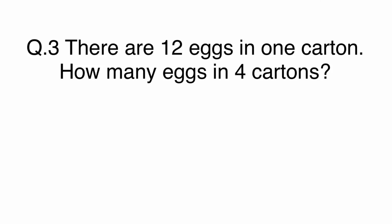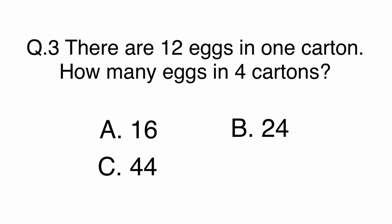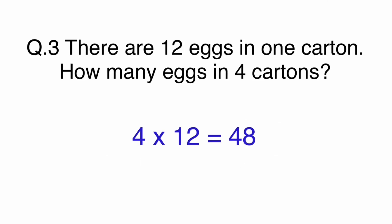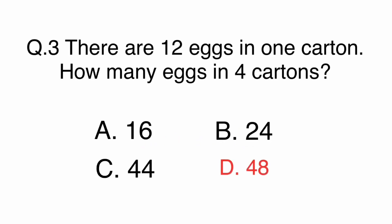Question 3. There are 12 eggs in one carton. How many eggs in 4 cartons? A. 16. B. 24. C. 44. Or D. 48. 4 times 12 equals 48. The answer is D, 48.